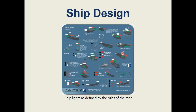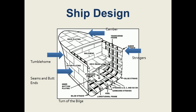The large blue arrows point to features of a ship's hull that must be learned for the OUPV exam: stringers, camber, tumblehome, seams and butt ends, pillars, and turn of the bilge. Copyright 2017 to 2018, John Beasley, Canada Point Maritime School.